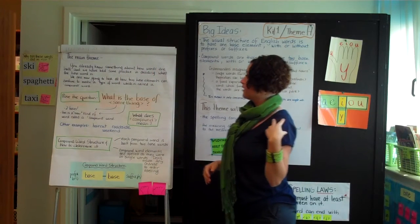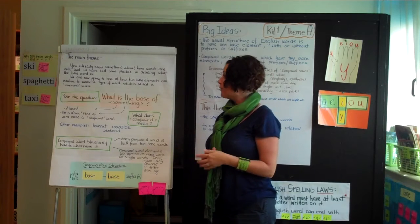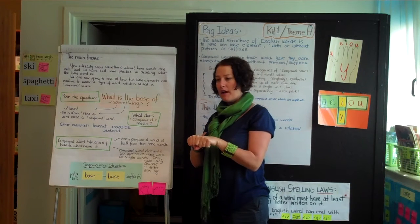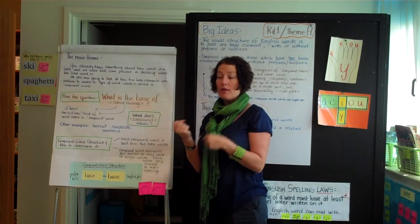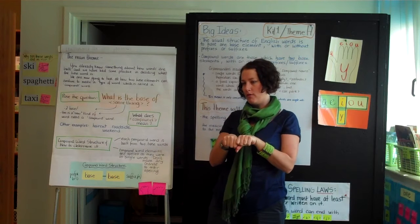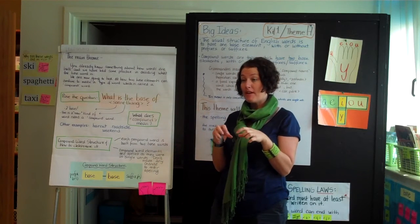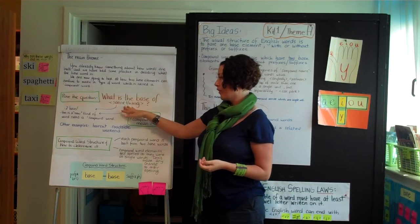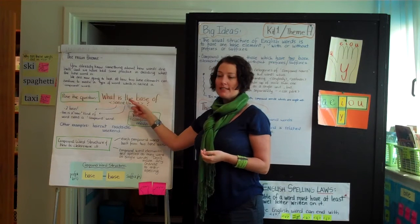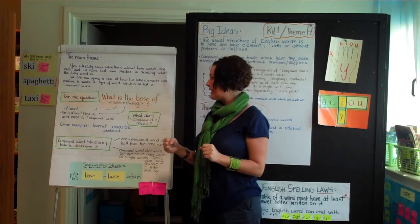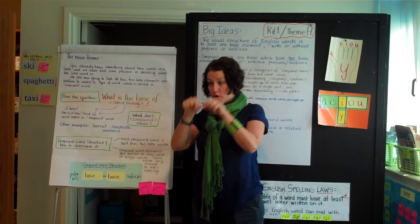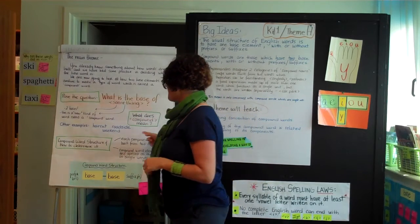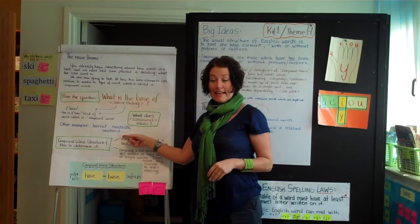This main theme — Melvin introduces it by saying we already know how words are built and have had practice deciding what a base word is. Now we need to look at how two base elements can be combined to make something called a compound word. Kids in the upper grades may say 'of course, I know that,' but what we're going to show them about compounds may challenge their understanding. For little kids, this may be the first time they think about two words put together. One way to start is to pose the question: what is the base of the word 'something'? What they'll determine is there are two bases — a new kind of word. Other examples to start with are haircut, roadside, or weekend.